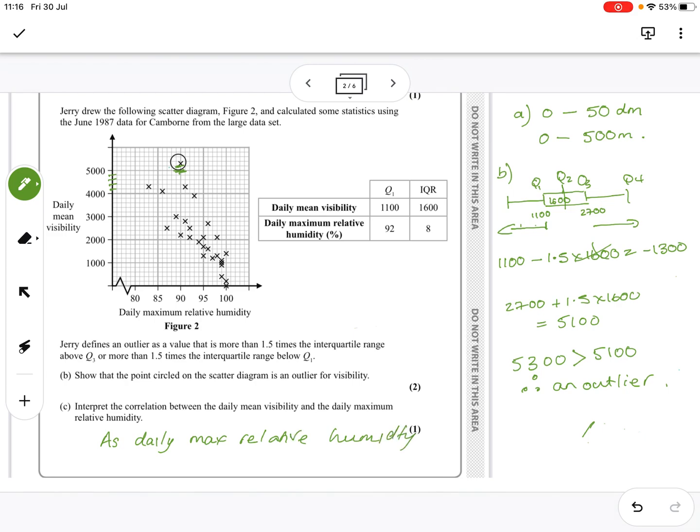as daily maximum relative humidity increases, because it's interpret, yeah, it's not just tell me what the correlation is, the daily mean visibility decreases.